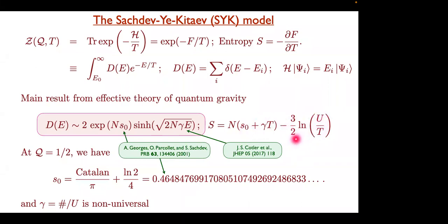Comparing these two terms, when temperature is of order e to the minus N, this correction term can become bigger than the leading term, and the entropy formula makes no sense. But temperature of order e to the minus N is extremely small — it's basically the level spacing. At that point you have to worry about the discreteness of the levels, but before that you don't.